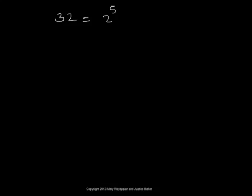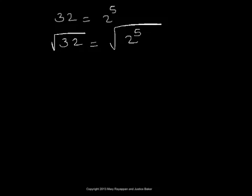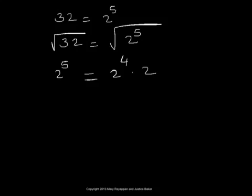Now, square root of 32 will be the square root of 2 to the fifth power. We will rewrite 2 to the fifth power to express it as a product involving perfect squares. So we take 2 to the fifth power and write that as 2 to the fourth power times 2. When you see an even power, you recognize that you can write that factor as a perfect square, because 2 to the fourth power is the same as 2 squared, to the power 2.